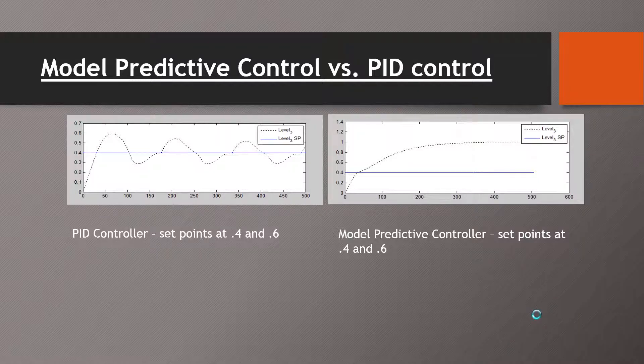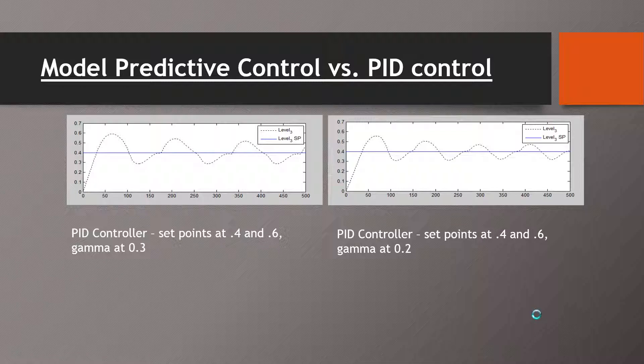Finally, we altered our gamma or our disturbance and lowered it from 0.3 to 0.2 and found that the oscillation in our PID controller was still there, but the convergence happened more quickly.